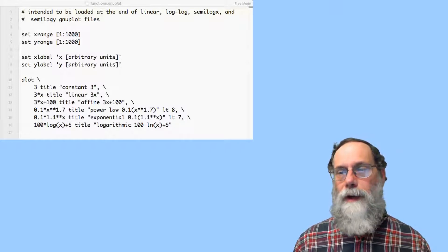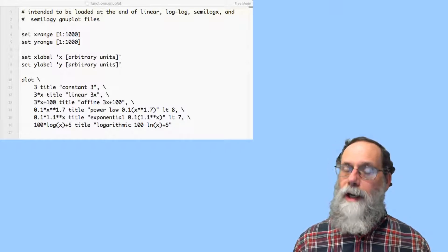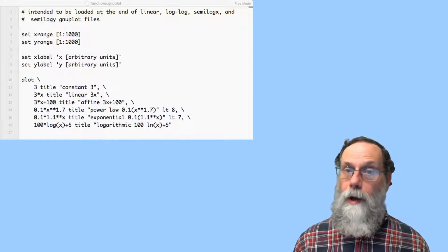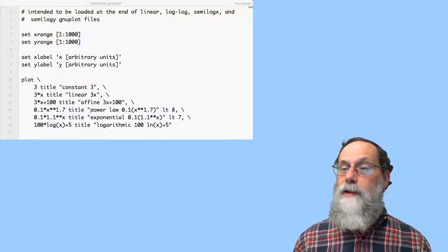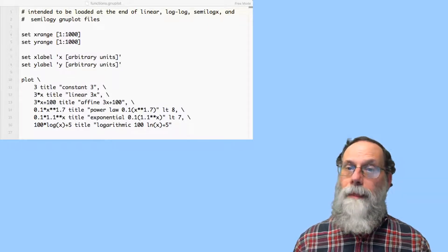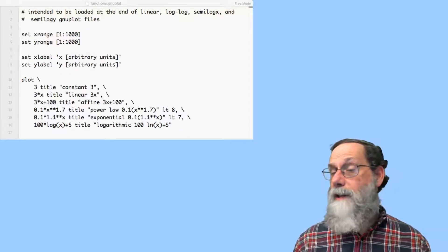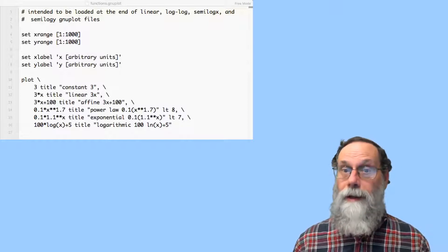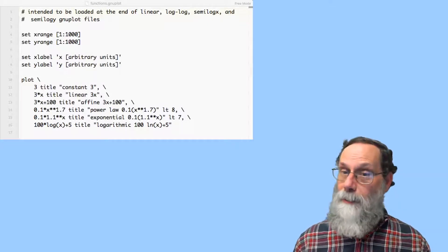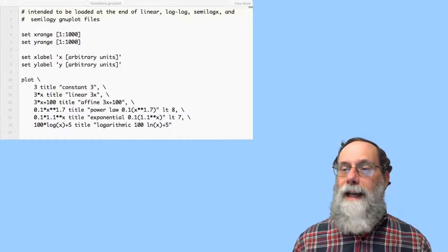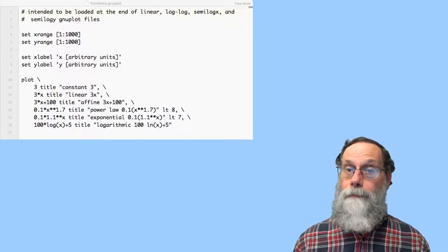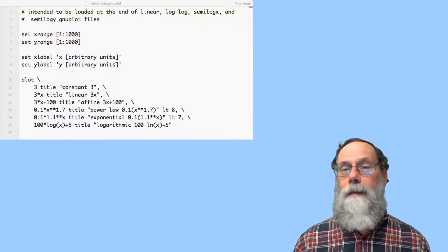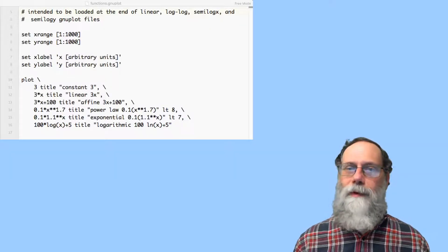For the next three functions, these are not going to be straight lines on a linear plot. One of them is a power law where I have x raised to some power. And you can think of the constant linear function as being x raised to a power. The constant is x raised to the 0 power. And the linear function has x raised to the first power. But now I can allow exponents other than 0 or 1. And then I have a multiplier in front there. So there's two parameters for power law.